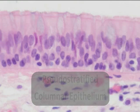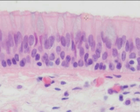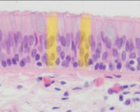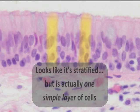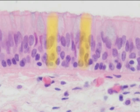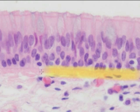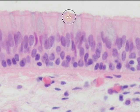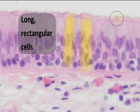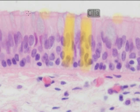Our next epithelial tissue is pseudostratified columnar epithelium. This is a single layer of columnar epithelial cells. It looks like it's stratified — all these nuclei of different cells appear to be stacked in many layers — but in actuality, all of the cells make contact with the basement membrane found below the epithelium. We see columnar cells looking like simple columnar epithelium, very long and column-like.